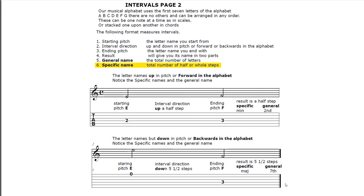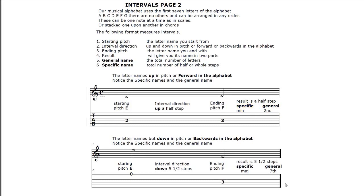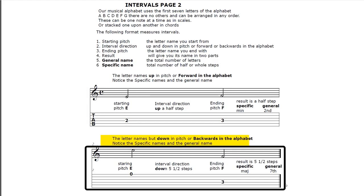The specific name is the total number of half steps or whole steps. The letter names go up in pitch or forward in the alphabet. Notice the specific and the general names. We see the starting pitch E, second fret fourth string, interval direction up a half step, ending pitch F. The result is a half step, so the general name is two because it's E, F - two letter names - and the specific name is a minor second.